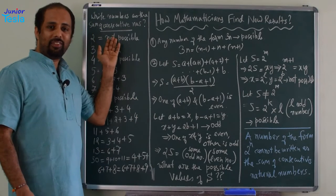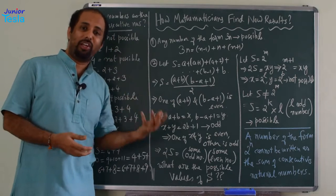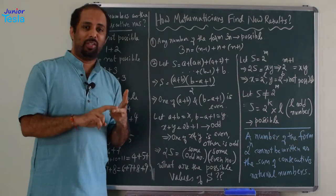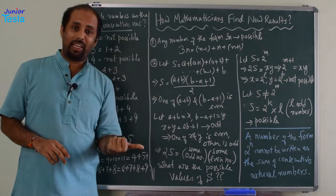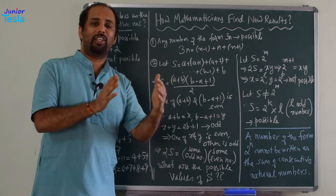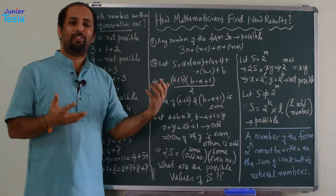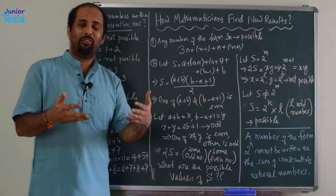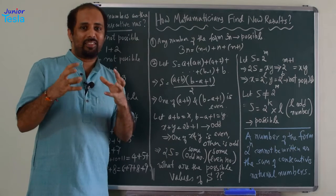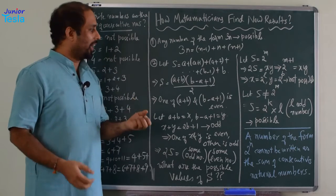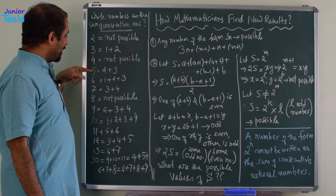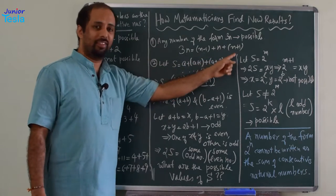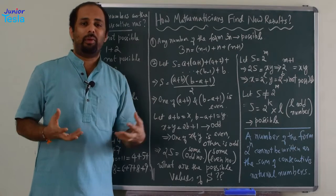We just started this like a fun game, one small exercise, but we already got two results. First result: if the number is an odd number, it is always possible to write it as sum of 2 consecutive natural numbers. Second result: if the number is a multiple of 3, then it is always possible to write it as sum of 3 consecutive natural numbers. We got two results without doing much! This is what excites mathematicians — when they do some exercise with numbers, they find some pattern, get excited, and try to generalize it. Generalization is one of the important features of any mathematical exercise.